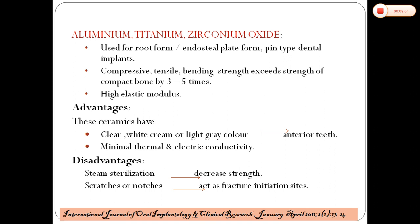Alumina, titanium, and zirconium oxide are used for root form, blade plate form, and pin-type dental implants. Their compressive, tensile, and bending strength exceeds that of compact bone by three to five times, with high elastic modulus. Advantages: ceramics have a clear white, cream, or light grey color, and are most commonly used in the anterior region. They have minimal thermal and electrical conductivity. Main disadvantages: steam sterilization decreases the strength, and scratches or notches act as crack initiation sites.